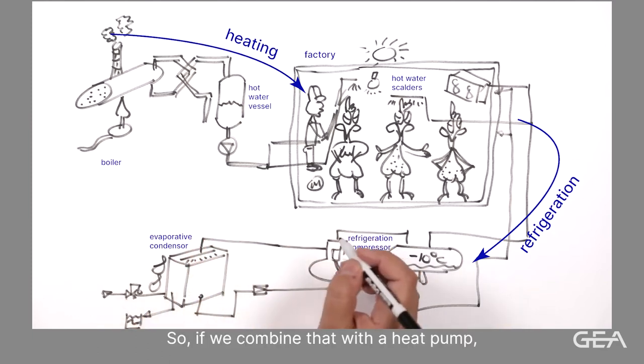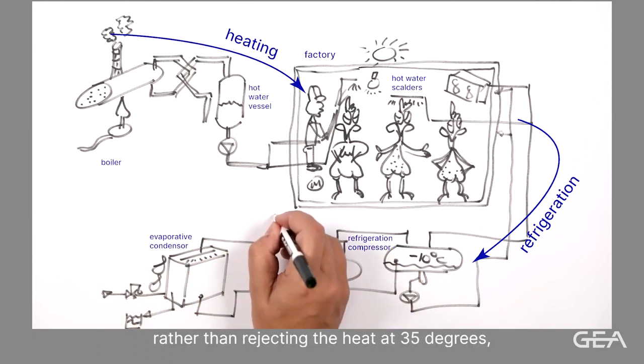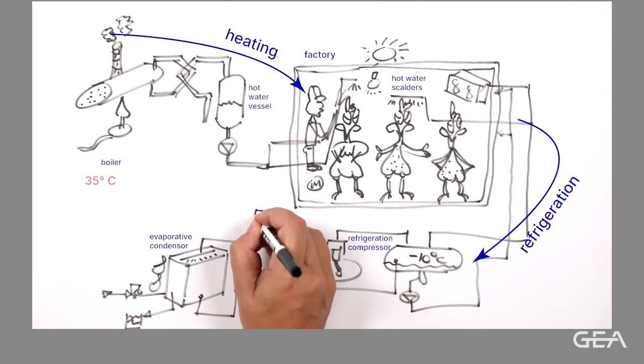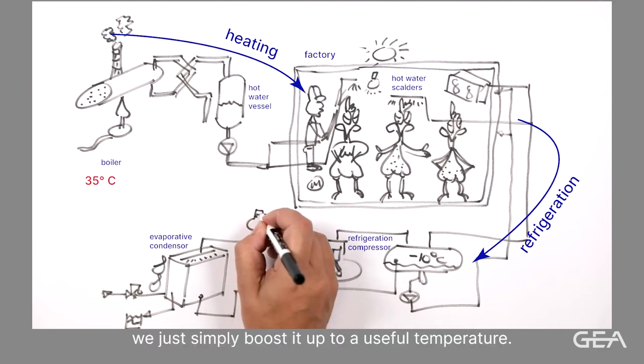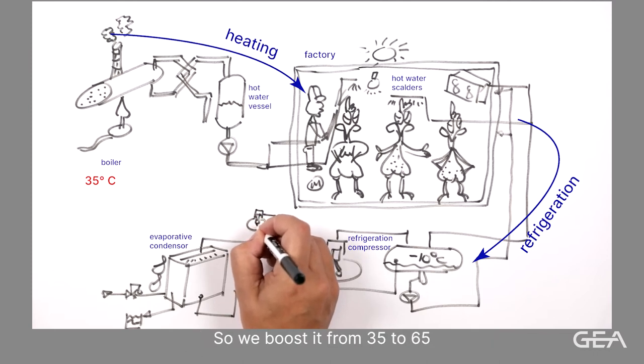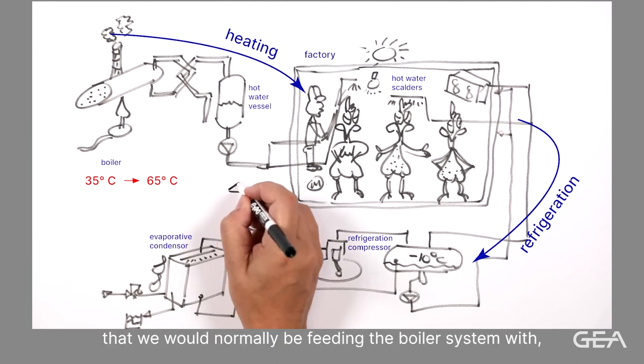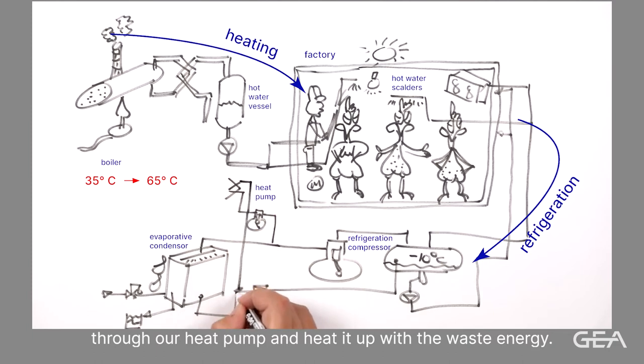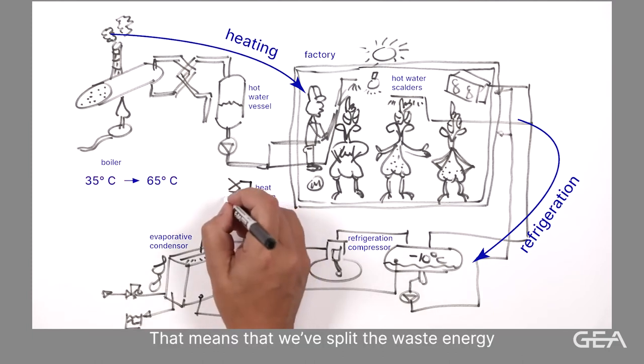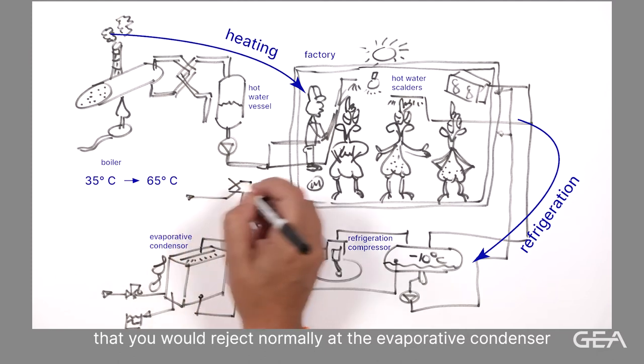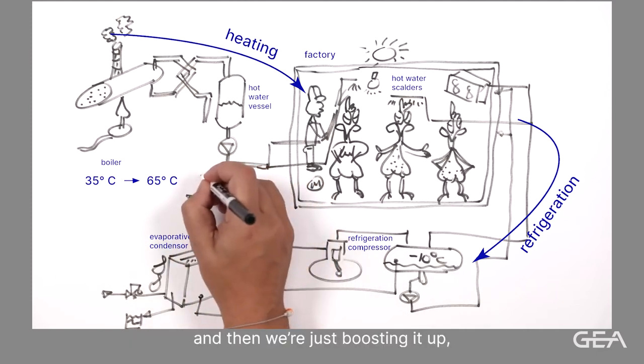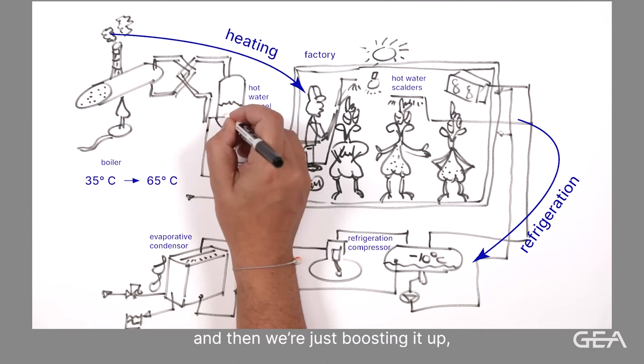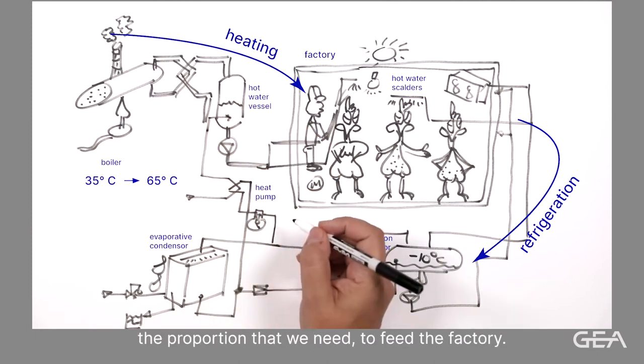So if we combine that with a heat pump, rather than rejecting the heat at 35 degrees, we just simply boost it up to a useful temperature. So we boost it from 35 to 65. And then we use the cold water that you would normally be feeding the boiler system with through our heat pump and heat it up with the waste energy. Which means that we've split the waste energy that you would reject normally at the evaporative condenser, and then we're just boosting it up the proportion that we need to feed the factory.